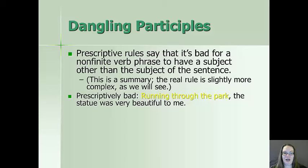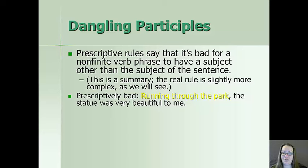Here is an example: the non-finite verb phrase is 'running through the park.' The full sentence is 'Running through the park, the statue was very beautiful to me.' Your mental grammar might pause while you try to determine whether the statue was running through the park, or whether the speaker was. This is why dangling participles are considered a violation — the subject 'the statue' doesn't seem to match 'running through the park.'